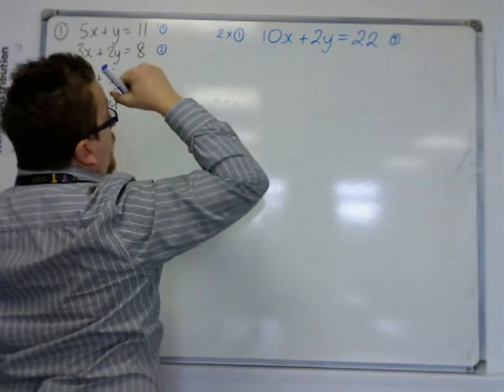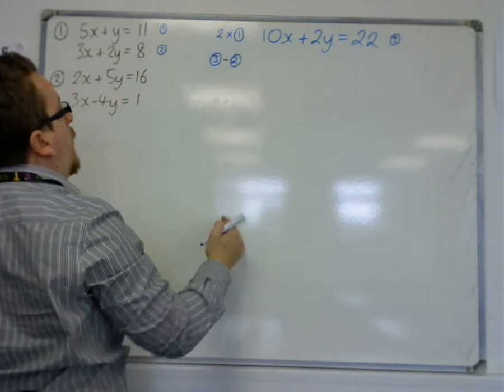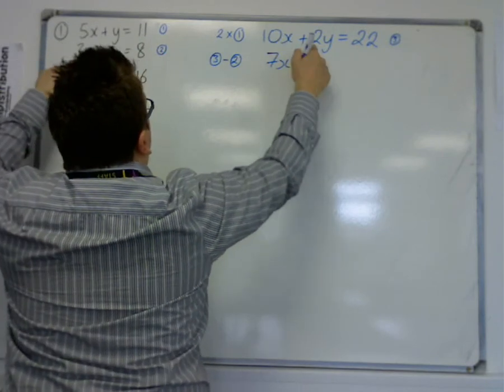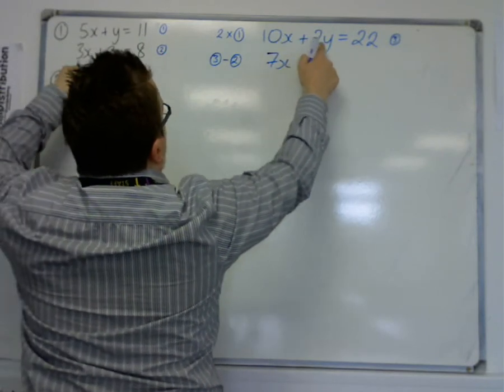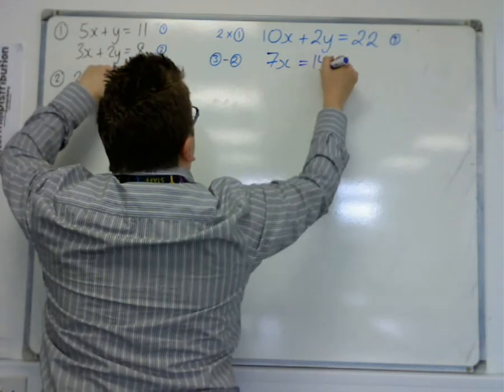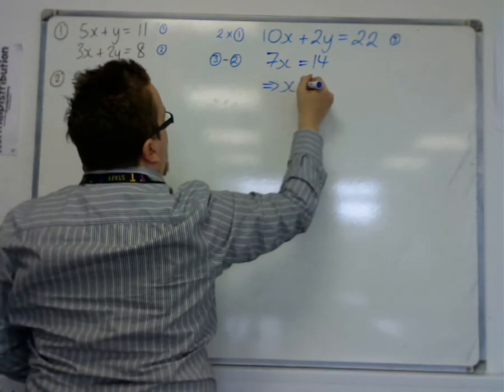Then I can say, well I'll do equation 3 take away equation 2, and that will eliminate the y's. I'll get 10x take away 3x is 7x. 2y take away 2y is 0. 22 take away 8 is 14. So if 7x is 14, then x is 2.